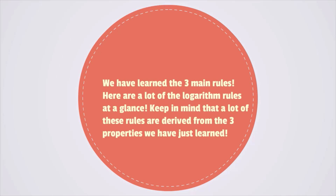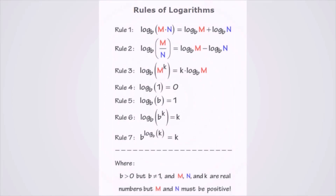We have learned the three main logarithm rules. Here are all of the logarithm rules at a glance. Rule 1, 2, and 3 are the rules we just covered. Rule 4: log base B of 1 is equal to 0. Rule 5: log base B of B is always equal to 1. Rule 6 is the power rule in simpler form. Rule 7: B to the power of log base B of K is equal to K, as we saw with the anti-log. In all these rules, B is greater than 0 but does not equal 1, and M, N, and K are real numbers, but M and N must be positive.